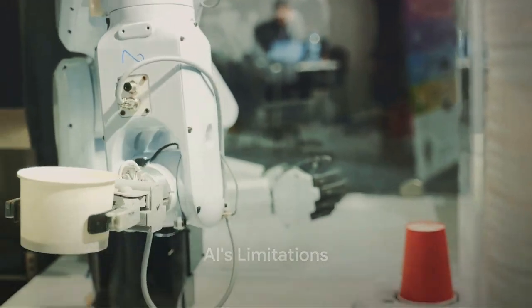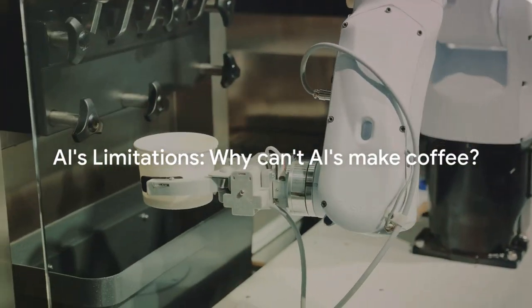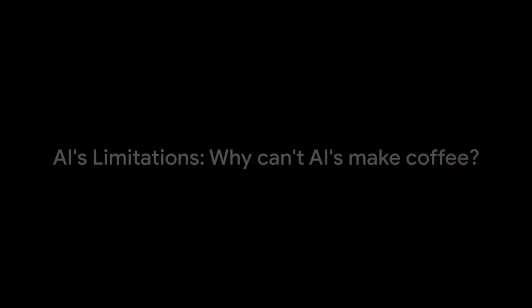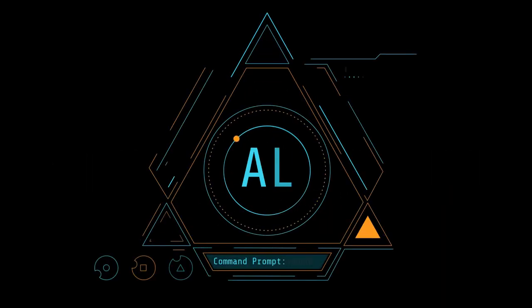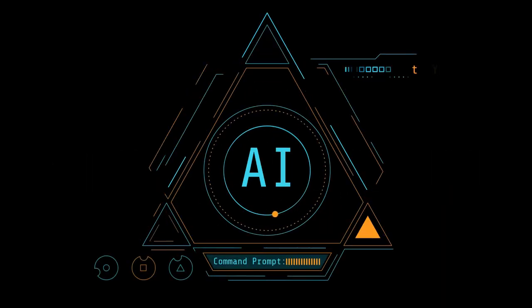And lastly, why can't AIs make coffee? Because they might Java glitch and spill it all over. So there you have it. Some of the best tech gags poking fun at our AI companions.